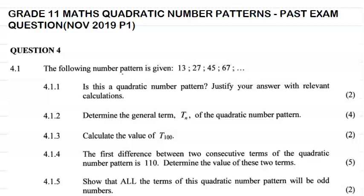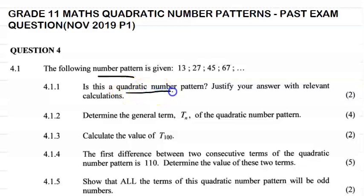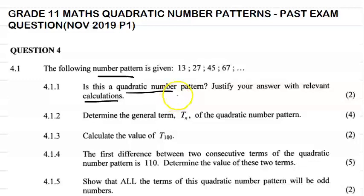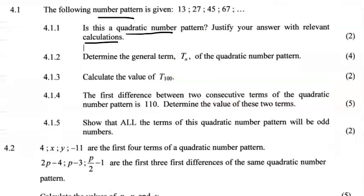The following number pattern is given: 13, 27, 45, and 67. They're asking us: is this a quadratic number pattern? Justify your answer with relevant calculations. The property of a quadratic number pattern is that the second difference is constant — constant means the same. So let's go and work that out.